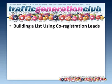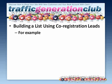Let's talk about building a list using co-registration leads and how you can build your own list quickly by buying co-registration leads. A co-registration lead is a subscriber that requests more information on a topic or subscribes to a certain newsletter at the same time they're joining another list. For example, if a subscriber is signing up for Company ABC's newsletter and checks a box to join Company XYZ's newsletter at the same time, then he has co-registered for those two newsletters and is considered a co-registration lead.